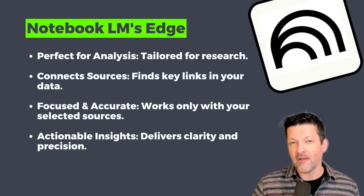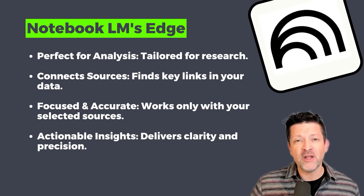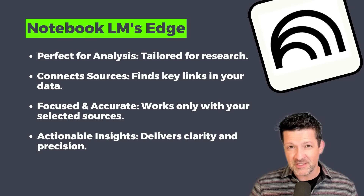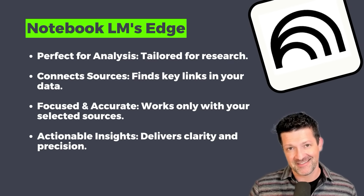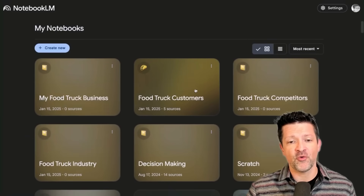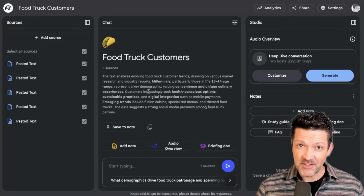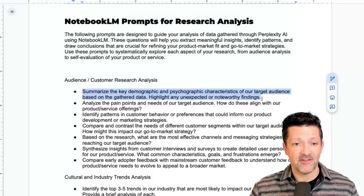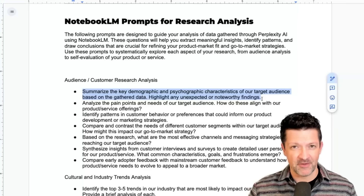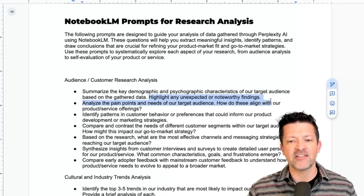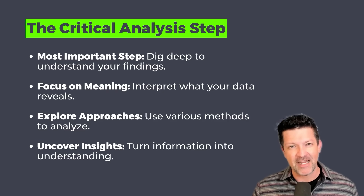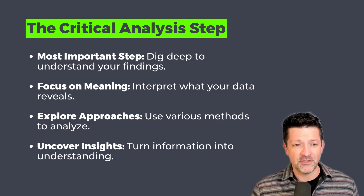This is where NotebookLM truly shines above and beyond any other AI tool. It can quickly and accurately draw stunning connections between the different sources you found during your research, and since it's specifically focused only on those sources, it is the perfect tool for this analysis step. Here inside NotebookLM, I've created a separate notebook for each silo — one for my food truck business, another for customers, competitors, and the industry. Inside each of these, I've added the sources I found inside Perplexity. Now I'm grabbing this analysis prompt from the cheat sheet, which looks at psychographic and demographic characteristics and specifically asks it to highlight any unexpected or noteworthy findings.